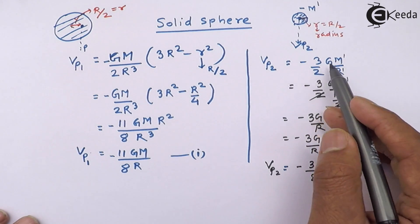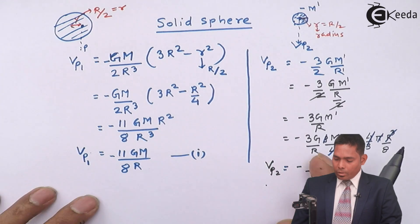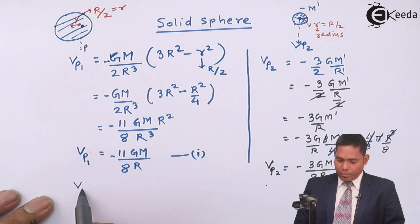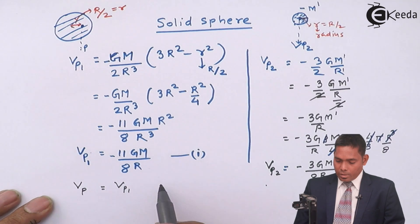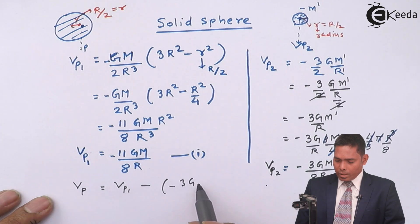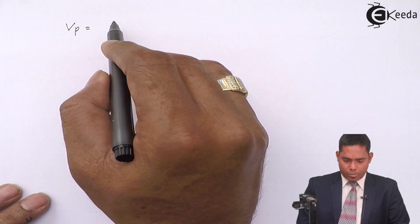The mass is negative, so VP2 becomes positive when added. The final potential at P is VP1 + (−VP2): that is −11GM/(8R) minus (−3GM/8R), which simplifies. Checking the options, the answer corresponds to −GM/R. That is how you find the potential at an interior point of a solid sphere when a spherical portion is removed. This is the answer to question seven.